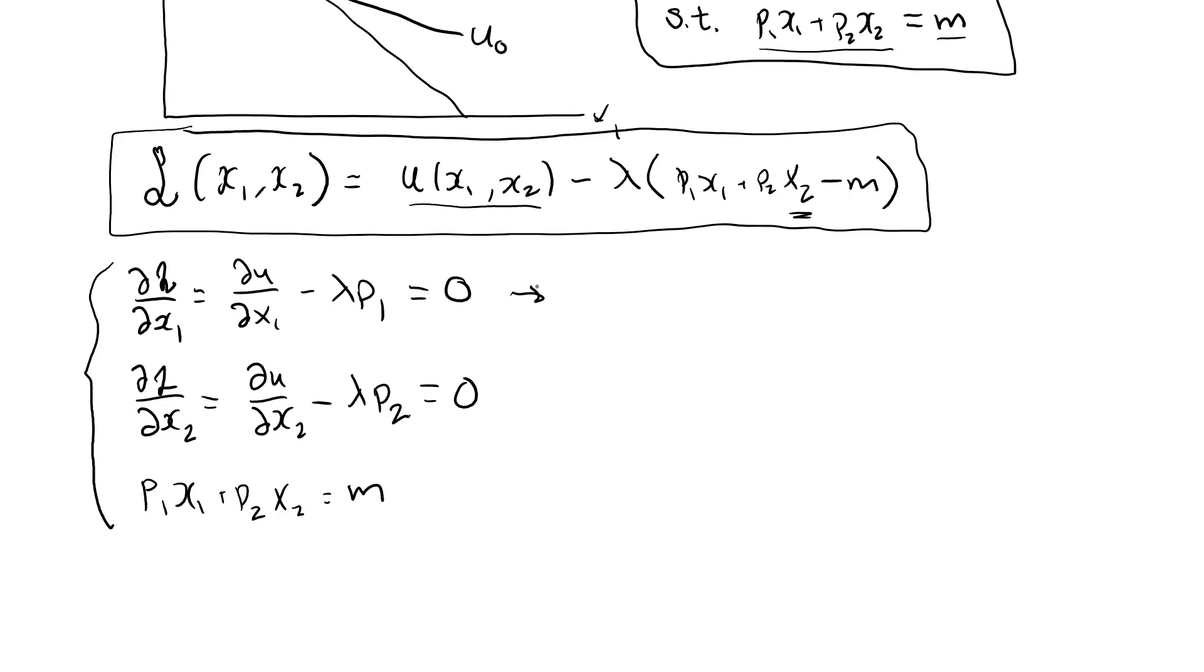From the first equation, the partial derivative of u with respect to x1, well, that's what we call marginal utility 1. Move lambda p1 over to the other side, and we see that mu1 is lambda p1, mu2 is equal to lambda p2.